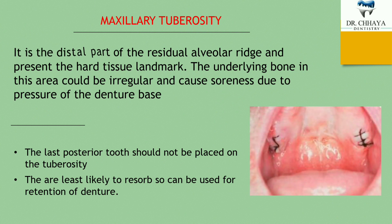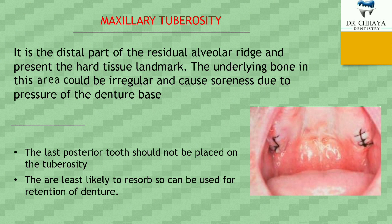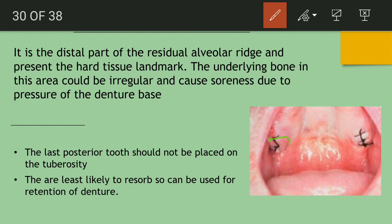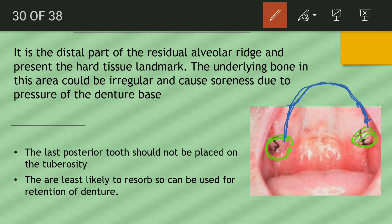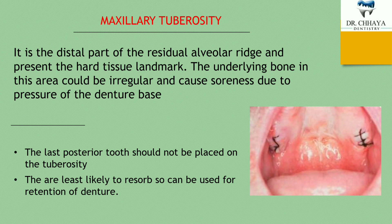Now, maxillary tuberosity: it is the distal part of the residual alveolar ridge and represents a hard tissue landmark. The underlying bone in this area could be irregular and cause soreness due to pressure on the denture base. In the diagram, this bulbous area is the maxillary tuberosity — the most distal end part of the alveolar ridge.